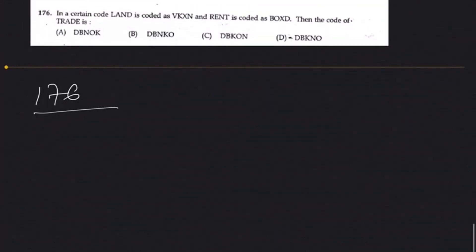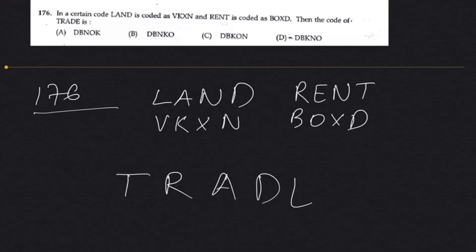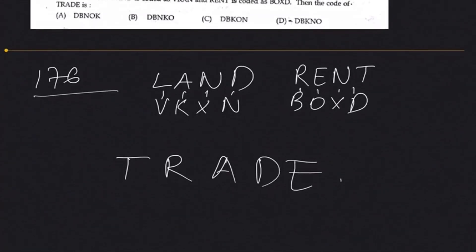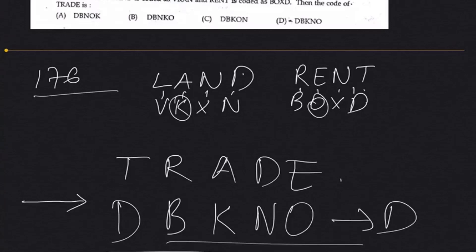Question 176: LEN is coded as VKXN and REN is coded as POXT. Find the code of TRADE. By matching each letter's corresponding code — T to P, R to K, A to K, D to N, E to O — the answer is TPKNO, option D.